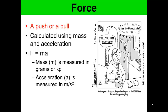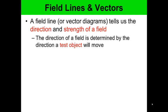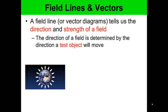Field line or vector diagrams tell us the direction and the strength of a field. The direction of a field is determined by the direction a test object will move. The field lines on the Earth show everything is moving towards the center of the Earth, and the test object here would be anything with mass.